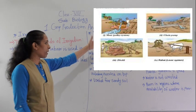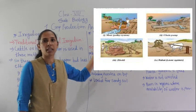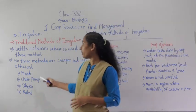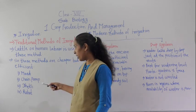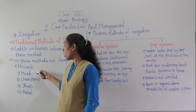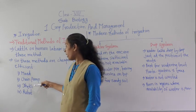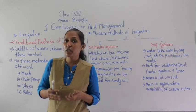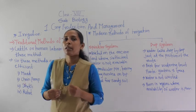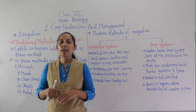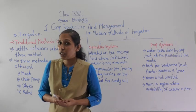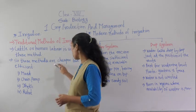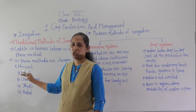You can see in the image how these traditional methods exactly worked. So these are the traditional methods of irrigation: moat, chen, perm, dhetti, and rahut. These were the traditional methods, but why people have left them? Because these methods are cheaper but less efficient.